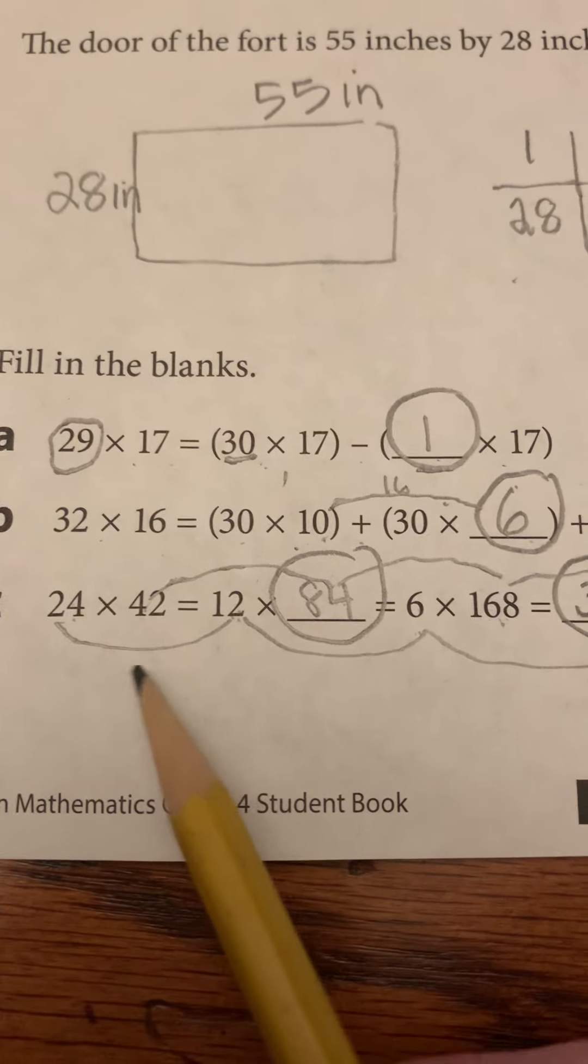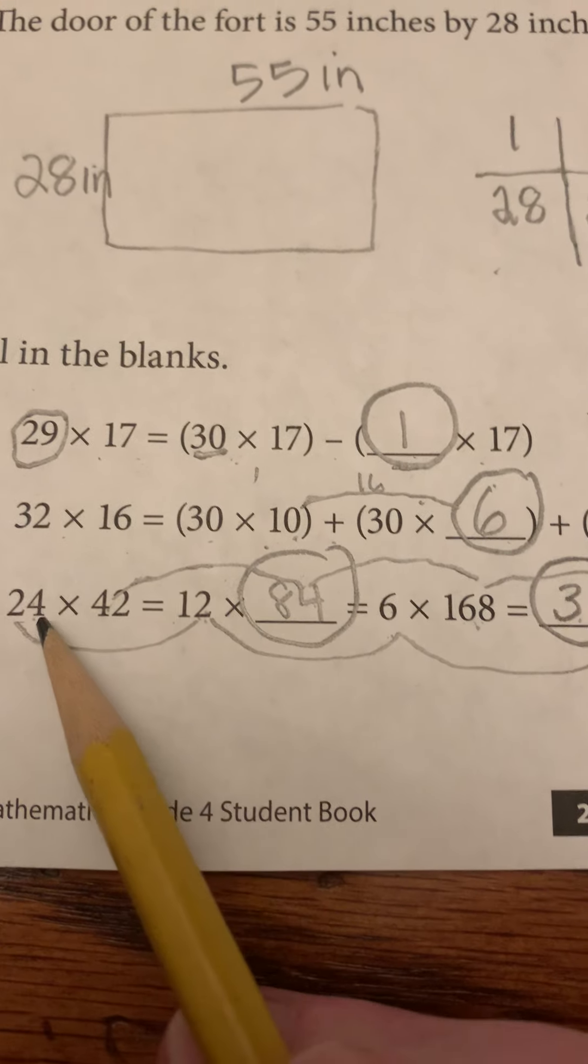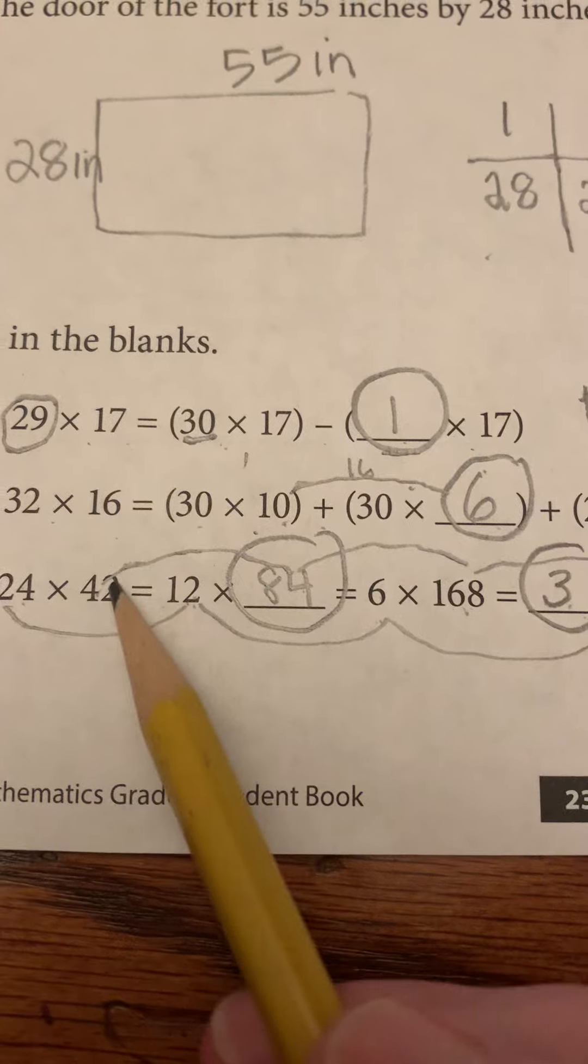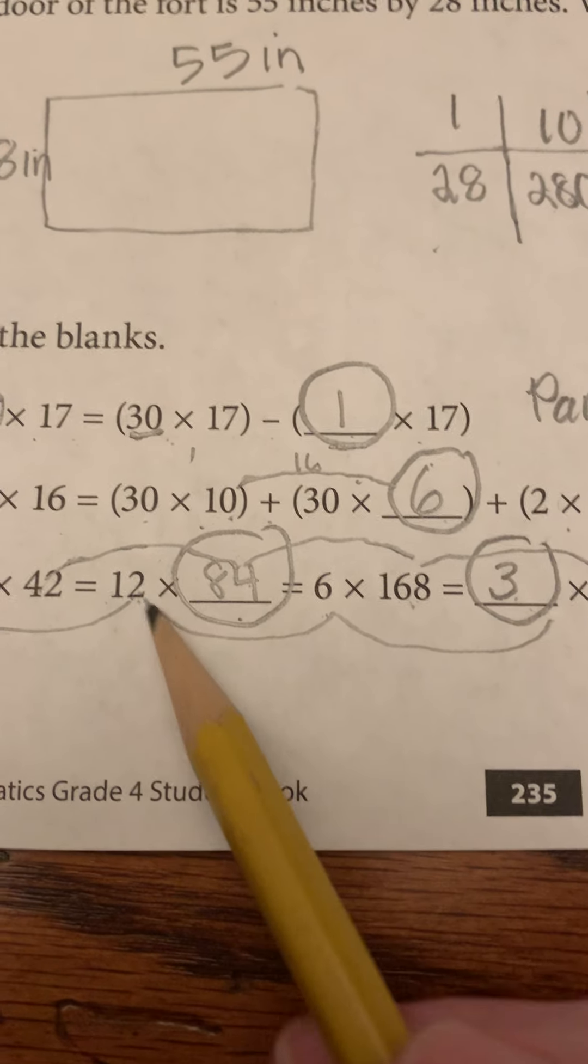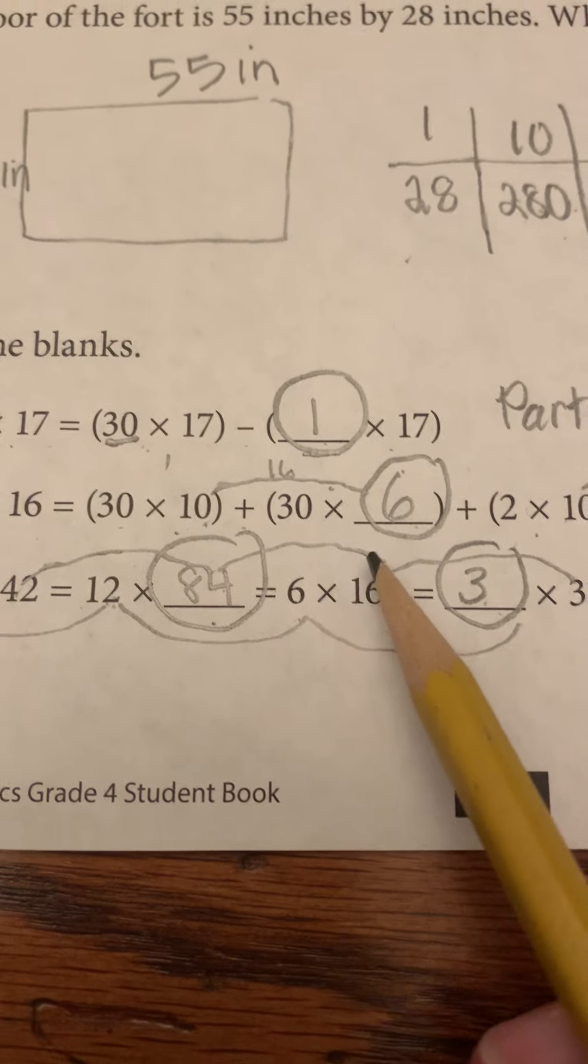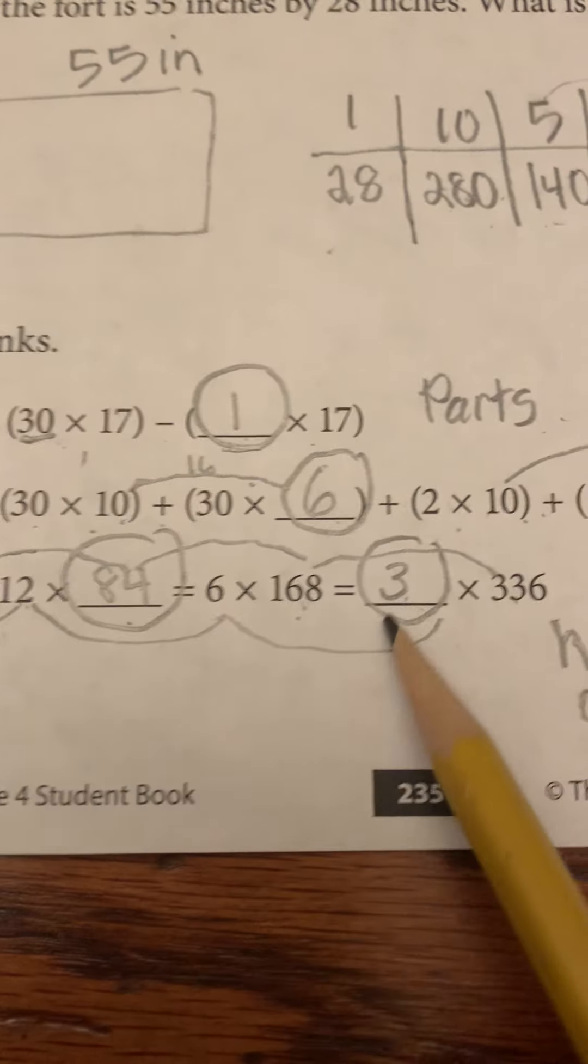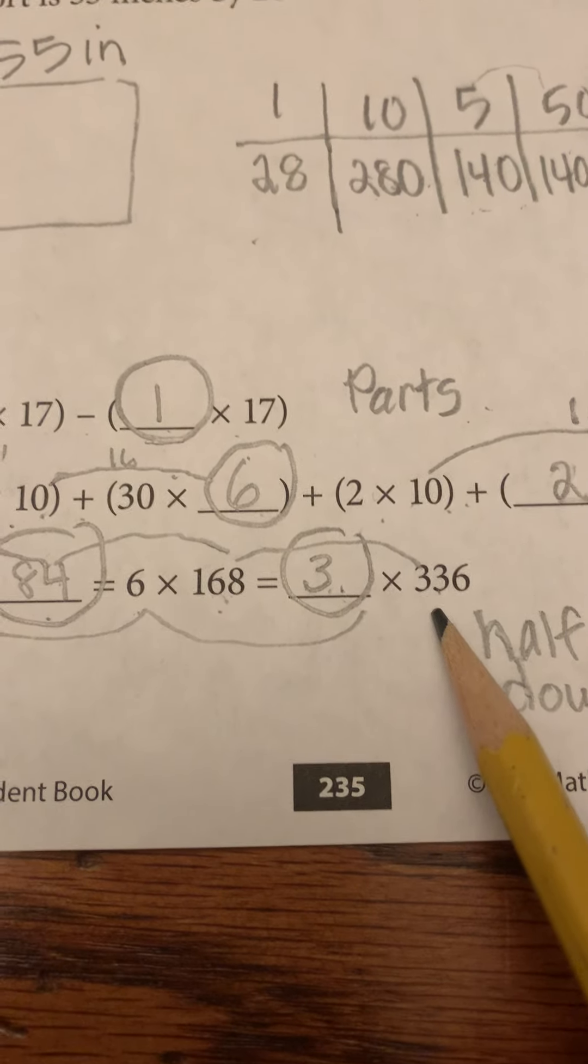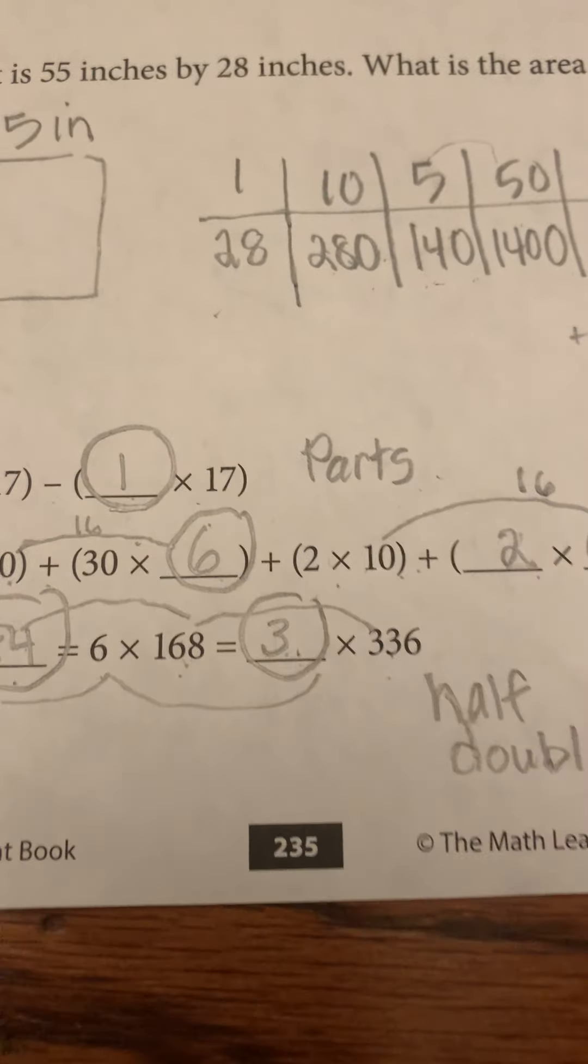Last one. We're doing a double and half. So double, I'm sorry, half to 12, double to 84. Half to 6, double to 168. Half to 3, double to 336. How did you do, friends?